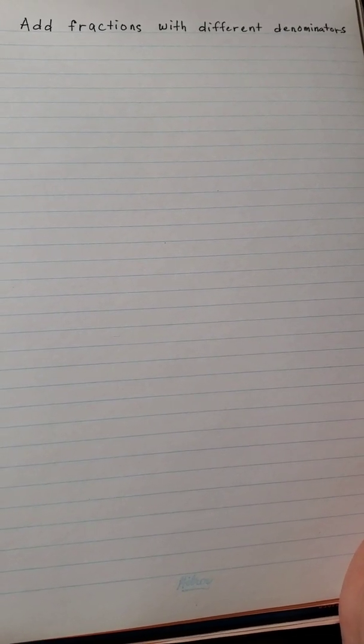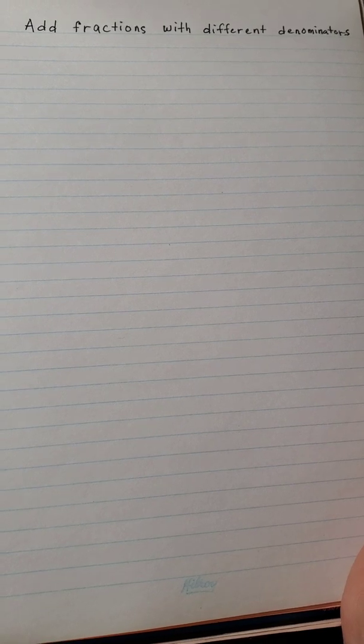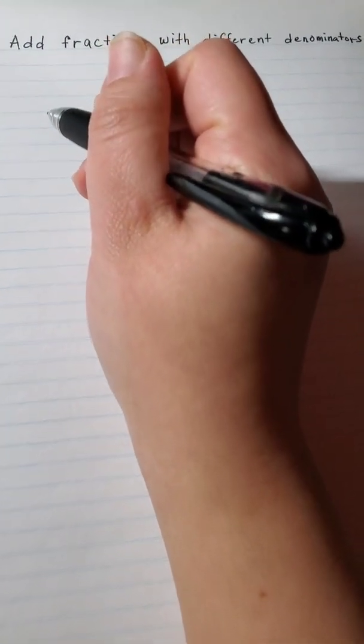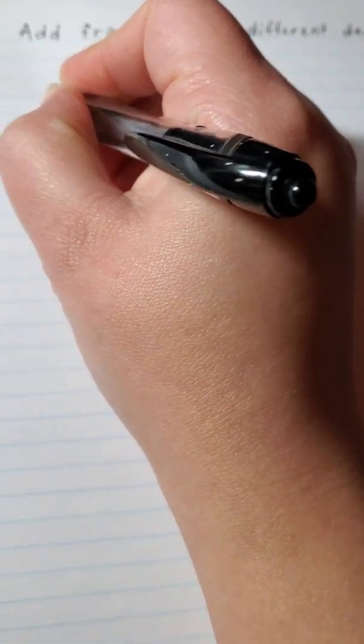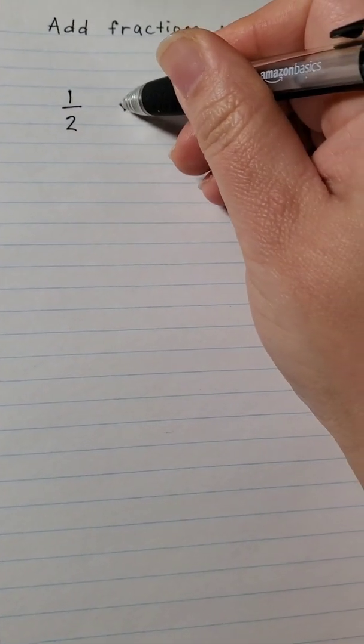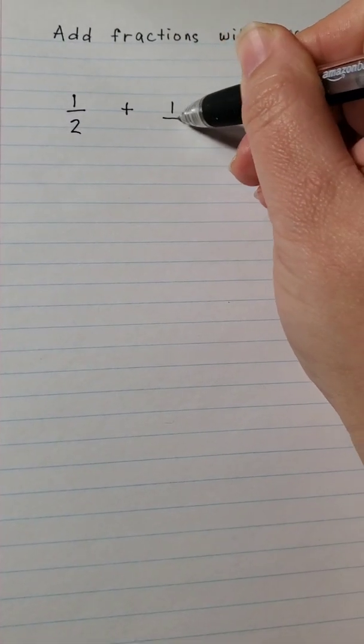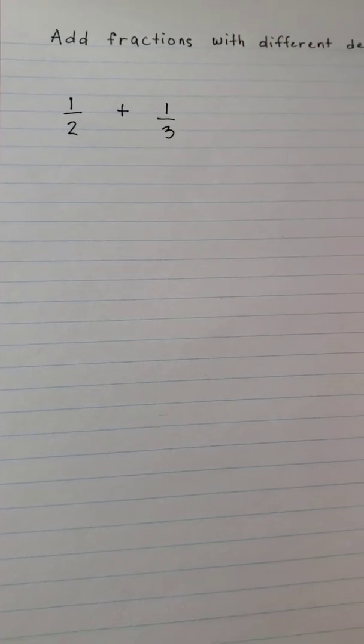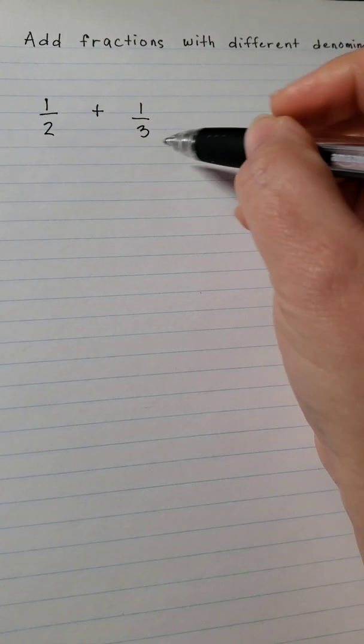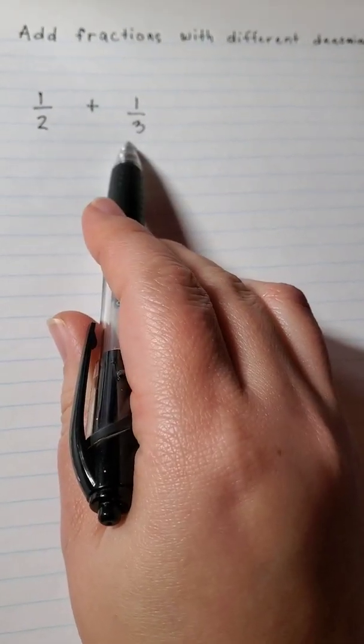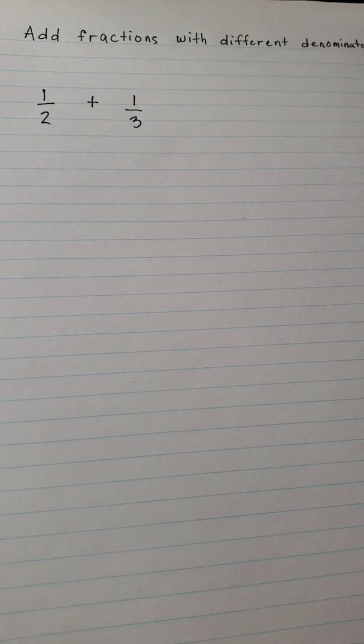Hi everyone, welcome to my channel. Today we're going to learn about adding fractions with different denominators. So my example below will be one-half plus one-third. You can see the denominators are not the same, so first step, what you need to do is find the common denominator.